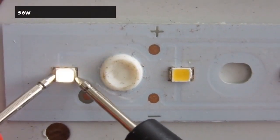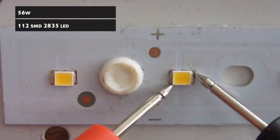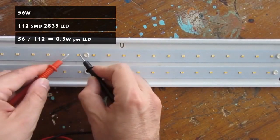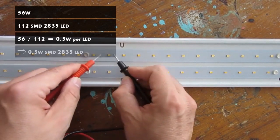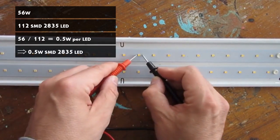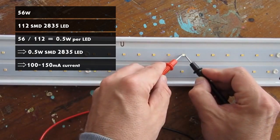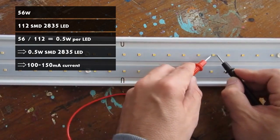The light is rated at 56 watts and has 112 lights. The individual power per LED should therefore be half watt. So we are dealing with the half watt version of the 2835 package which should typically require between 100 to 150 milliampere of nominal drive current.